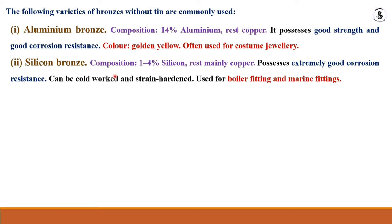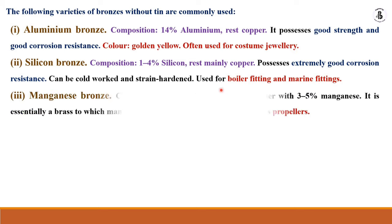Silicon bronze has a composition of 1 to 4% silicon, with mainly copper. It has good resistance to corrosion, can be cold worked and strain hardened, and is used for boiler fittings and marine fittings.